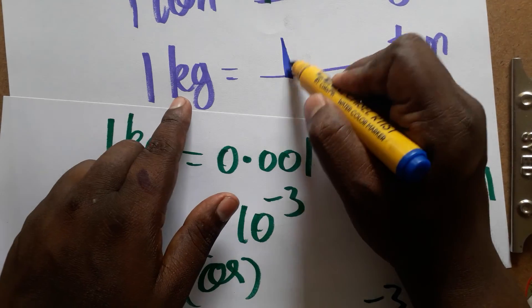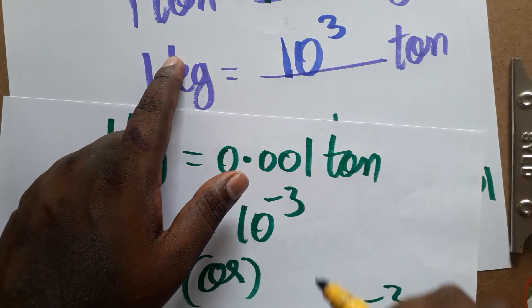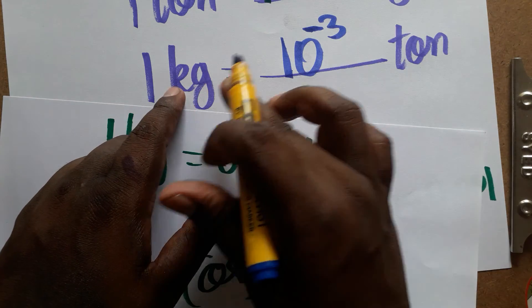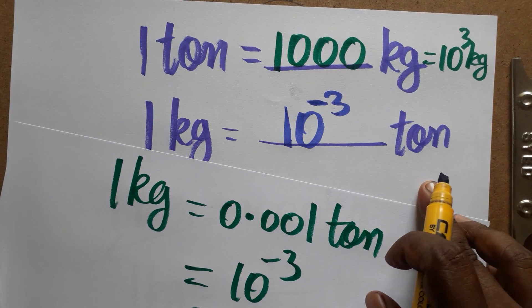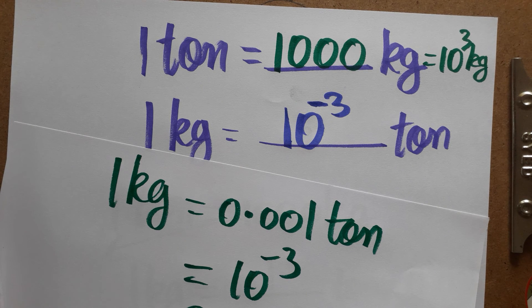So 1 kg is 10 power minus 3 ton, or 1 ton is 10 power plus 3 kg. It's minus for kg and plus for ton. Please subscribe my channel. Thank you for watching my video.